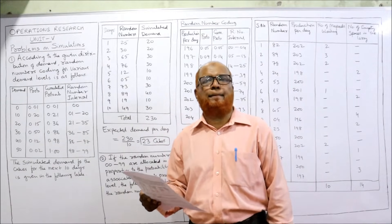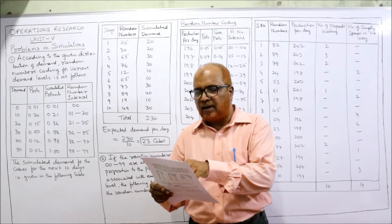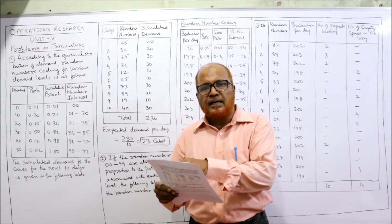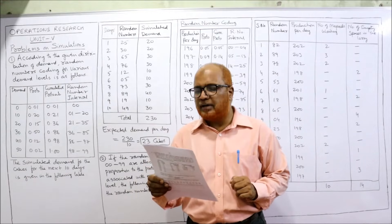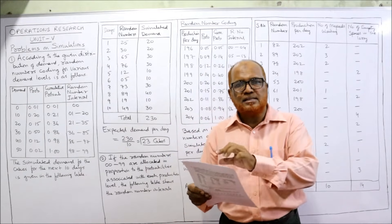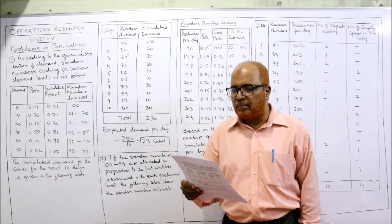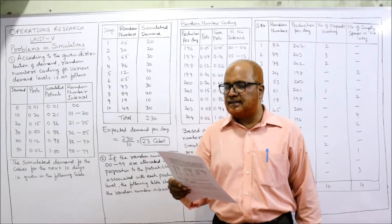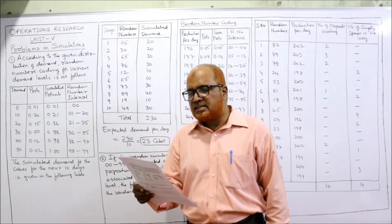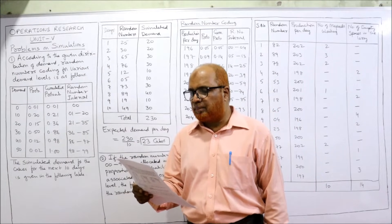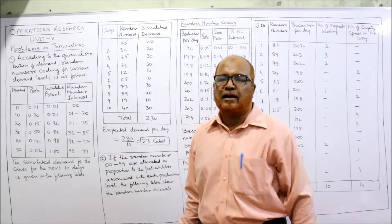The probability of demand being 10 cakes is 0.20, for 20 cakes it is 0.15, for 30 cakes it is 0.50, for 40 cakes it is 0.12, and for 50 cakes it is 0.02. Using the following sequence of random numbers, simulate the demand for the next 10 days, and estimate the daily average demand for the cakes based on simulated data.